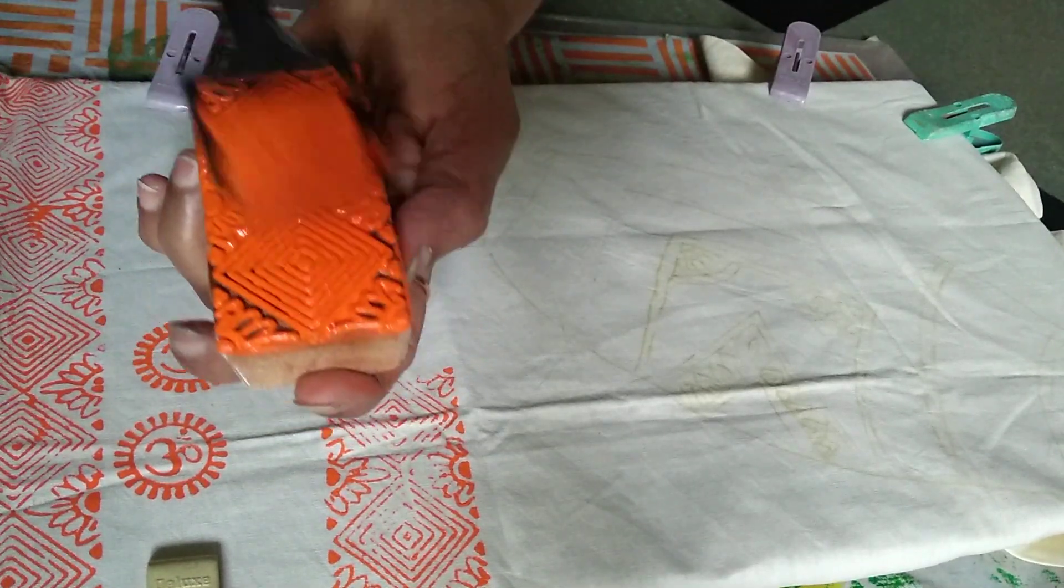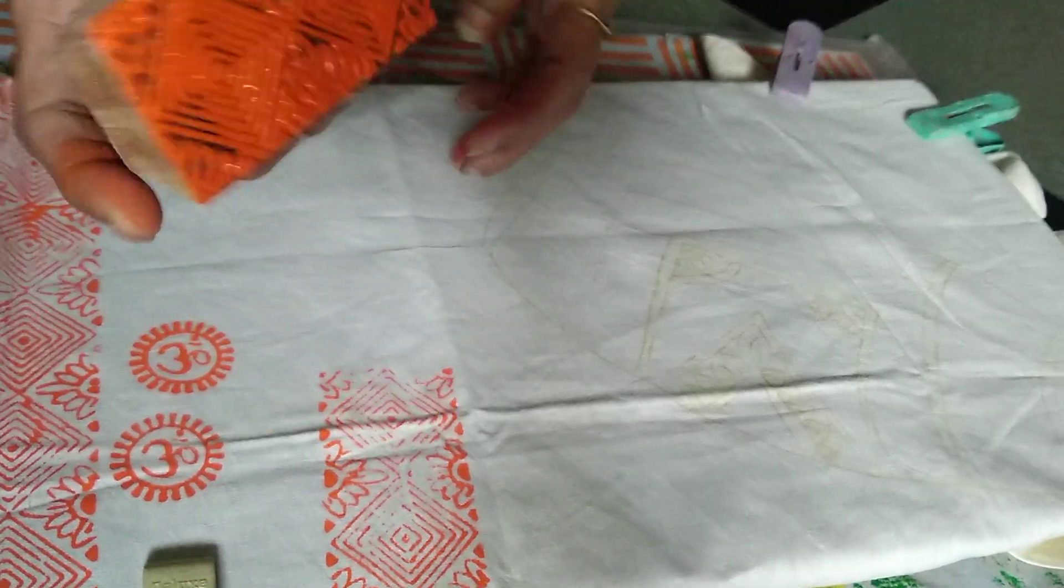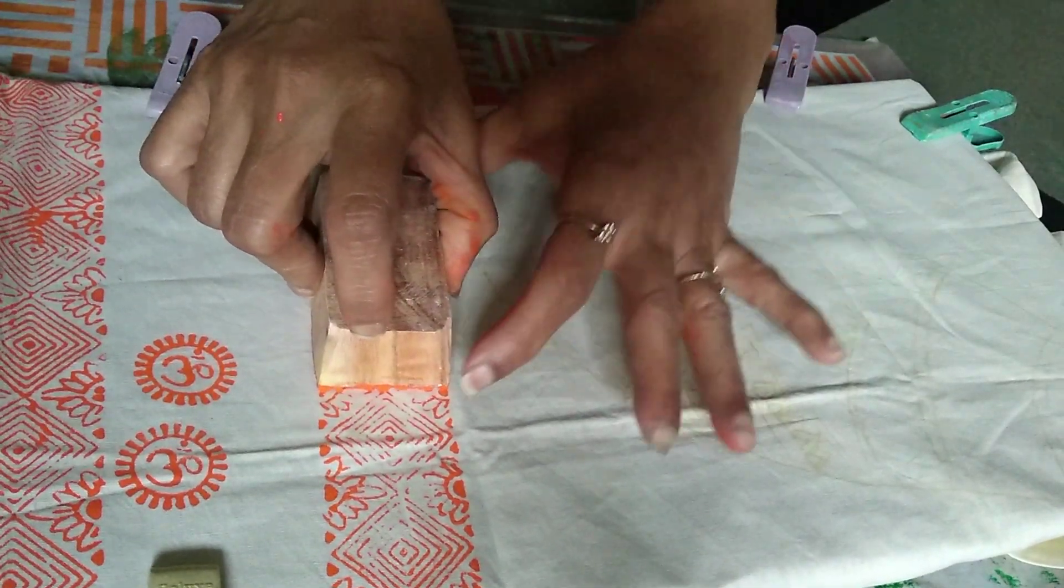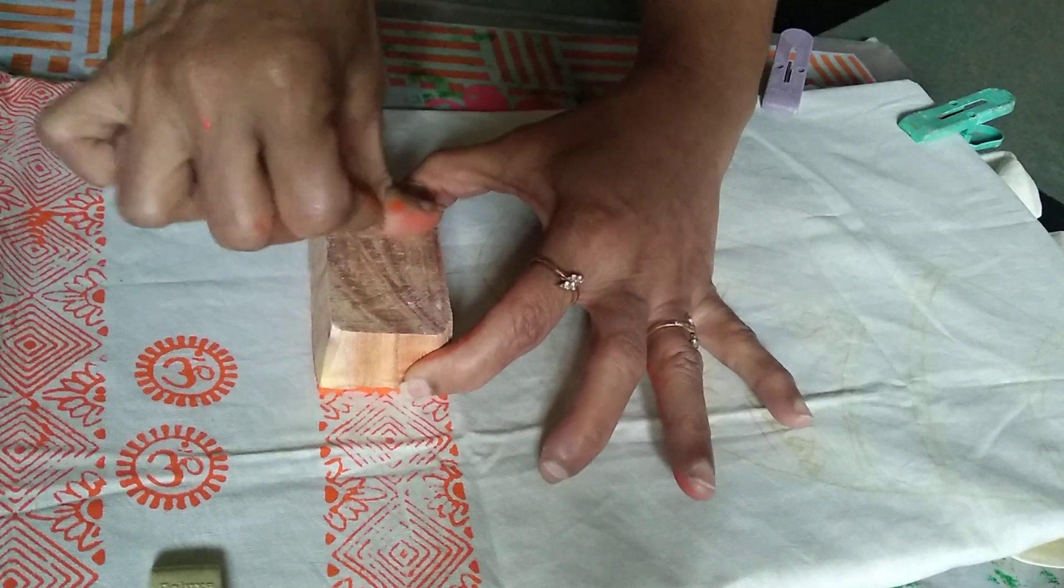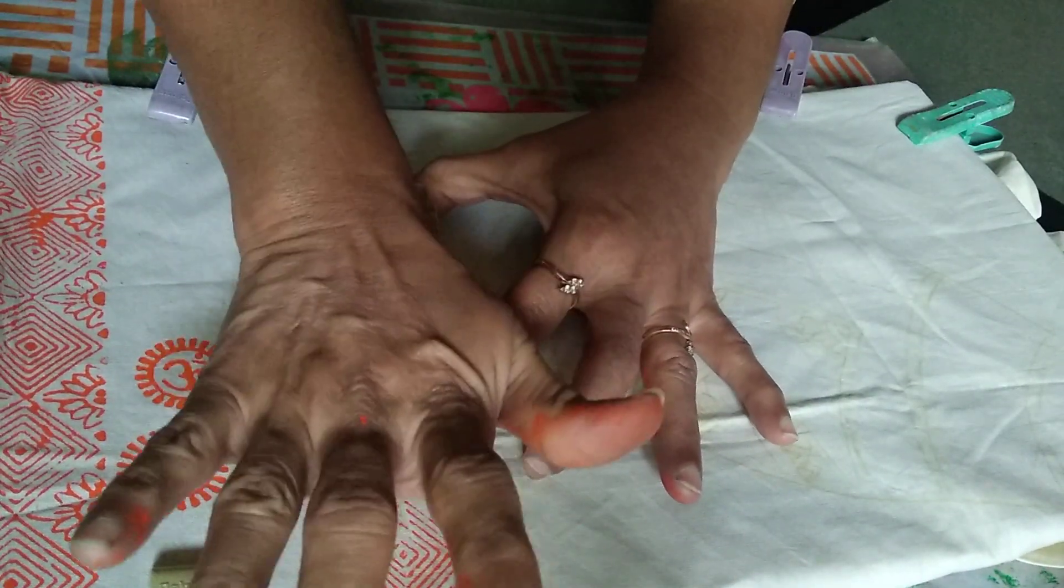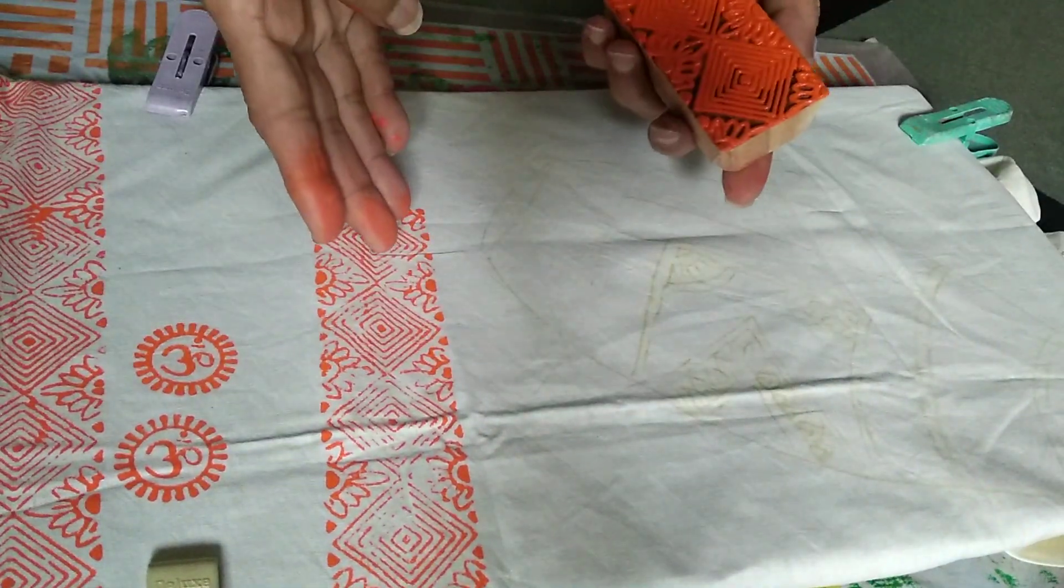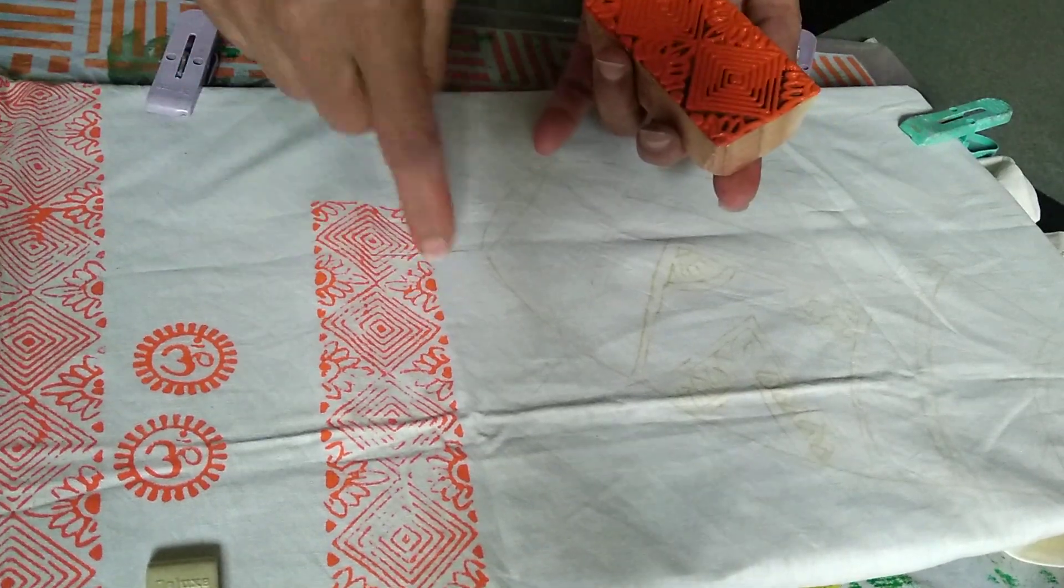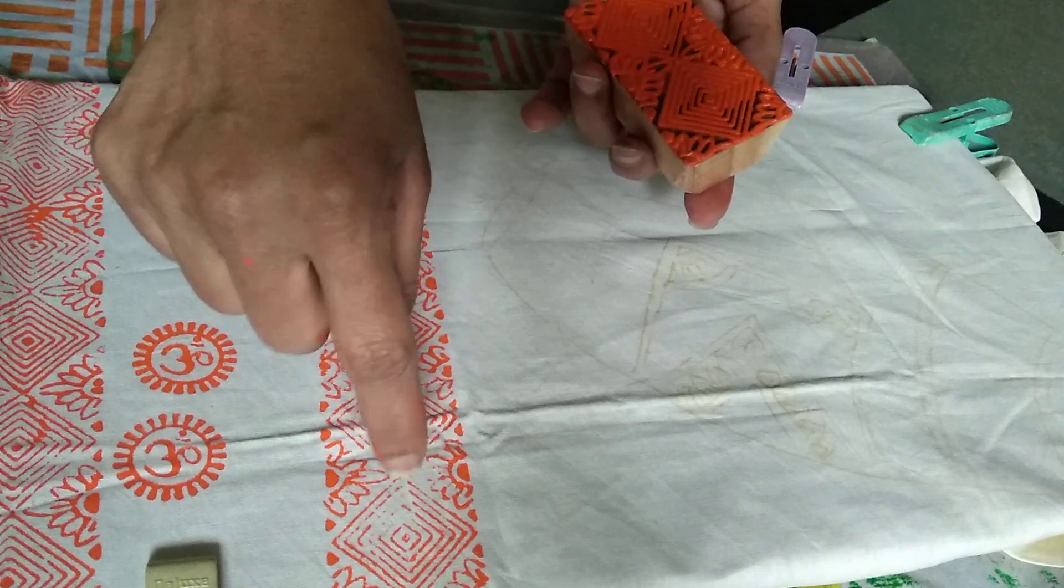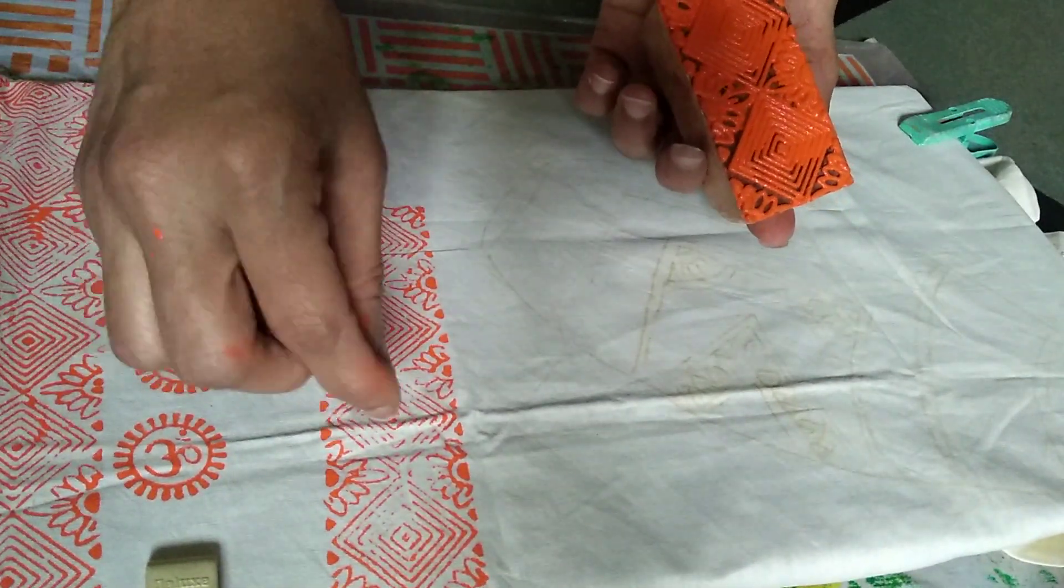Apply the color on the block and we will repeat the design. Press it and remove. So here we are - when we pressed it properly, you got the design nice, but here some of the design is missing because I did not put much pressure.